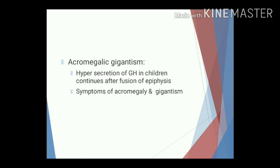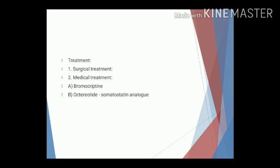Acromegalic gigantism presents mixed features of both acromegaly and gigantism. The cause is hypersecretion of growth hormone in childhood which continues after fusion of the epiphysis. Treatment may be surgical or medical. Surgical treatment is removal of the acidophilic tumour. Medical treatment includes bromocriptine — which suppresses growth hormone in acromegalic patients — and octreotide, a somatostatin analogue effective for long-term acromegaly, though associated with increased risk of gallstone formation.